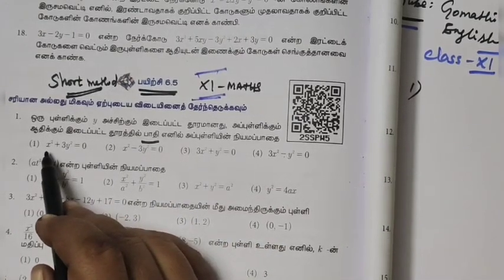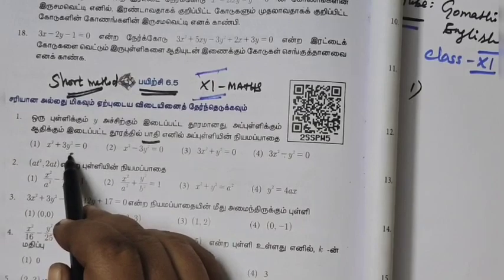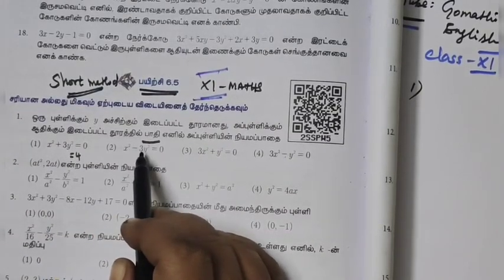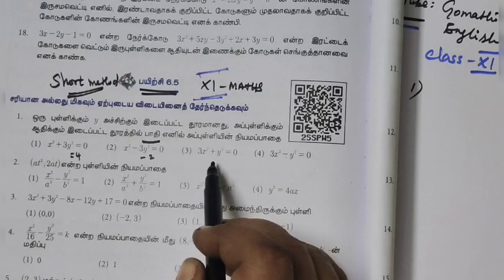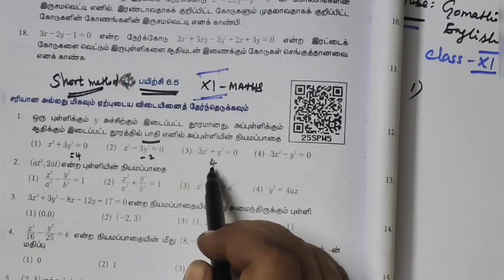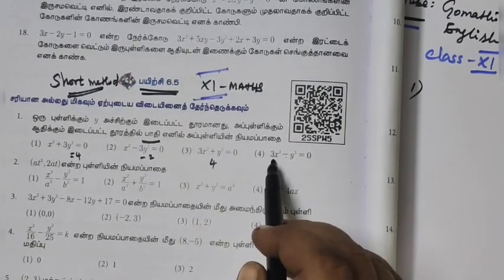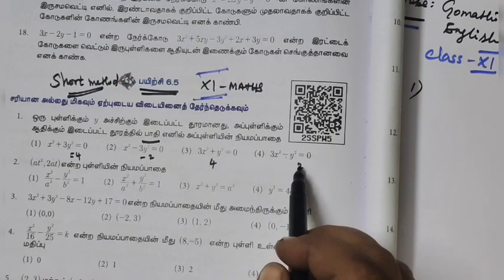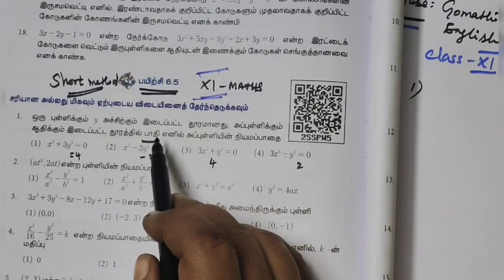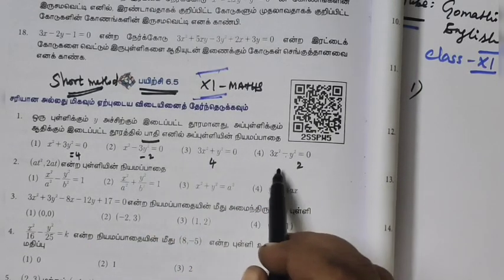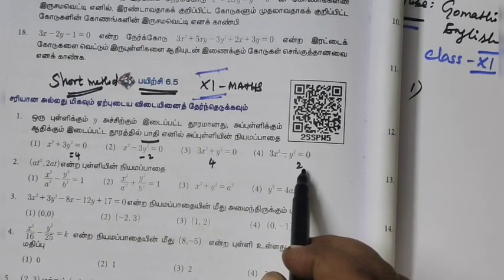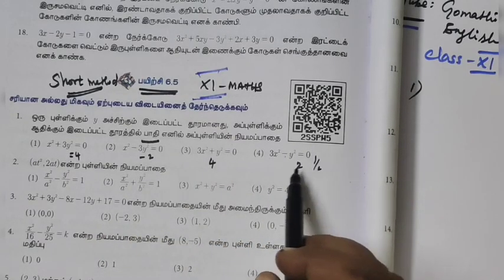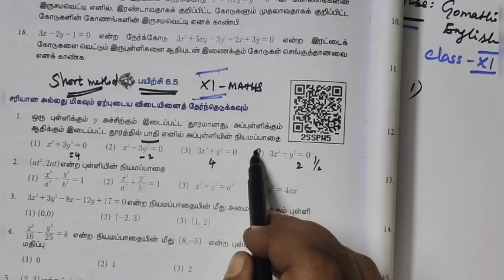If you add, 1 plus 3 is 4. Here, 1 minus 3 is minus 2. Here, 3 plus 1. Here, 3 minus 1 is 4. Here, 3 minus 1 is 2. So this is 2. If you add 2, it will be 0. If you add 2, you can assume 1 by 2. So the answer is 4.